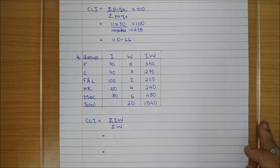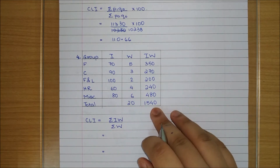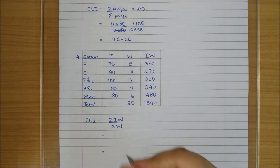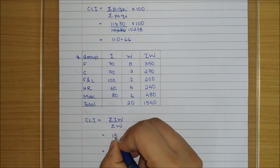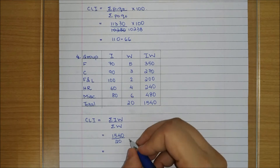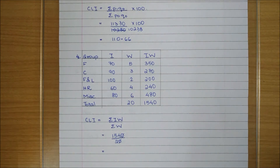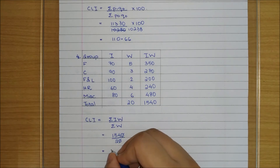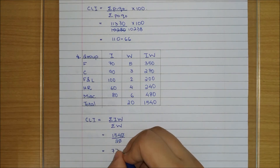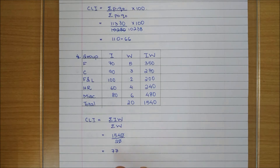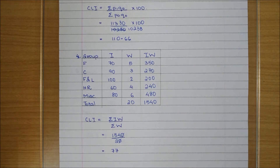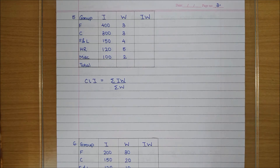Once we have found all the I·W values and their totals, we divide: 1540 divided by 20. We can cancel the zero, so 154 divided by 2 equals 77. So the cost of living index number is 77.